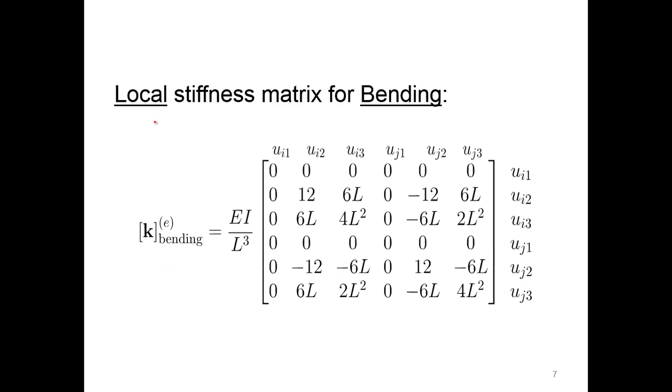So our local stiffness matrix for bending, from the last lecture, we came up with the local, so lowercase k, the bending stiffness matrix is this. We're not looking at anything here in the axial displacement.